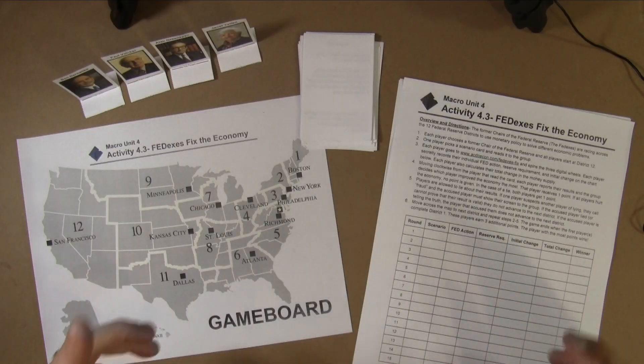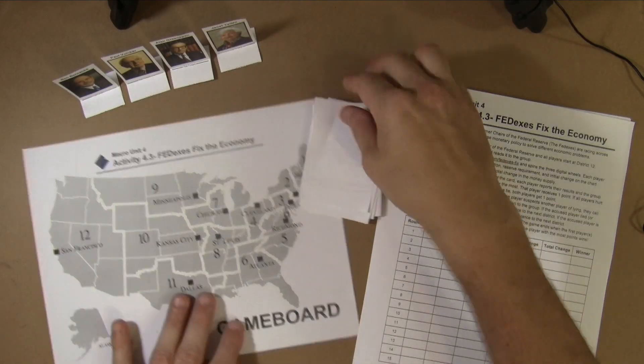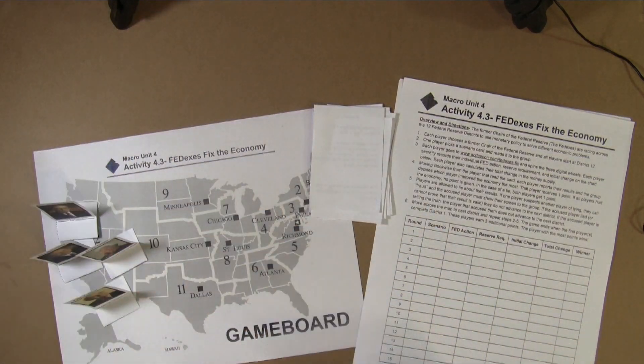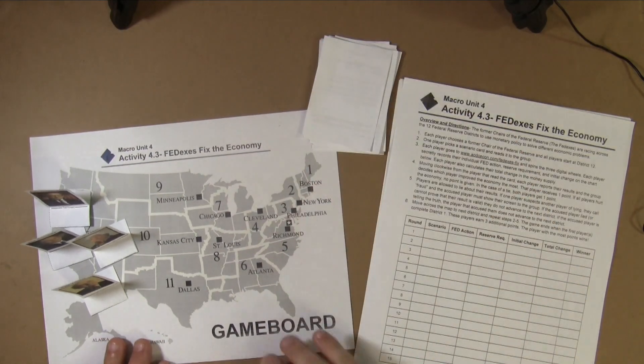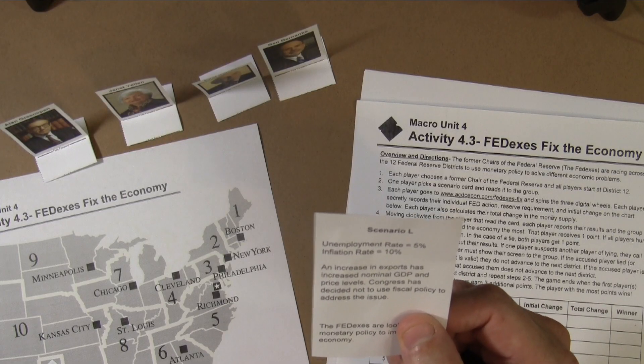Let's talk about gameplay. Each player chooses a former Fed chair, and all students start on District 12. One player picks up one of the scenario cards, which tells you where the economy is. This is the group's card — they read it to the group and everyone writes it down on their individual worksheet. For example, scenario L: unemployment rate is 5%, inflation rate is 10%, an increase in exports has increased nominal GDP and higher price levels, and Congress has decided not to use fiscal policy. The Fed Xs are looking to use monetary policy to improve the economy.